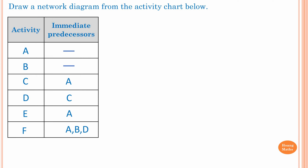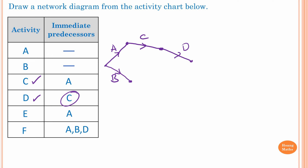Activity A and B have no prerequisites, so we start here — this is A, this is B. C has an immediate predecessor of A, so we start C from A and connect them. Then Activity D: we need to complete Activity C first. Looking ahead at Activity F, B and D need to connect together, so D should be connected to B as well. This is Activity D.